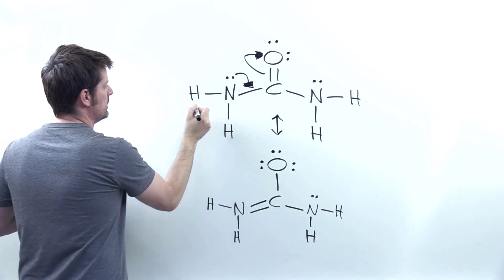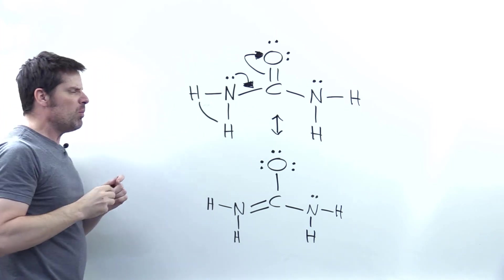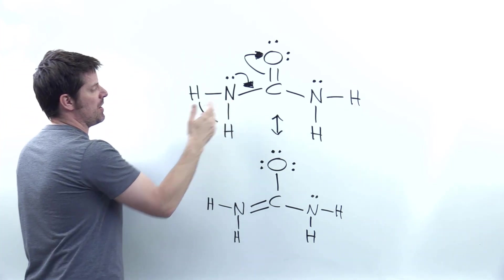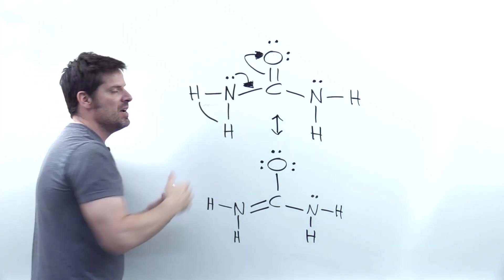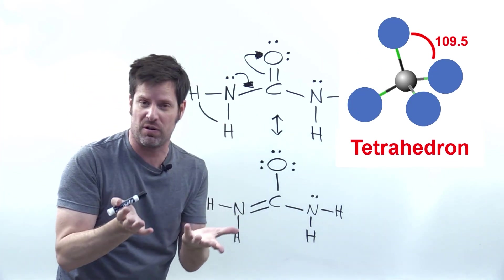Now, let's figure out bond angle. Just looking at this nitrogen-hydrogen-hydrogen bond right there, what would it be if there was no resonance? Here this nitrogen is surrounded by four things: a hydrogen, a hydrogen, a lone pair, and a carbon. Four things in a perfect world has a tetrahedral geometry with an angle of 109.5.